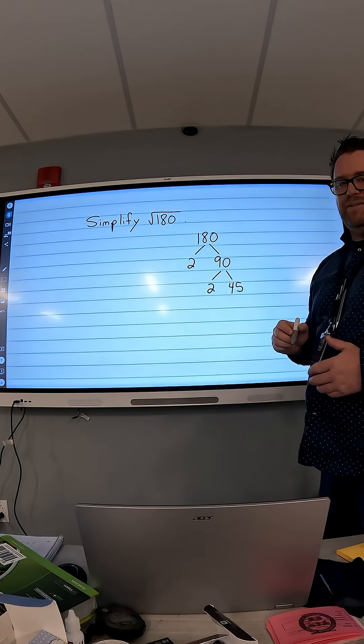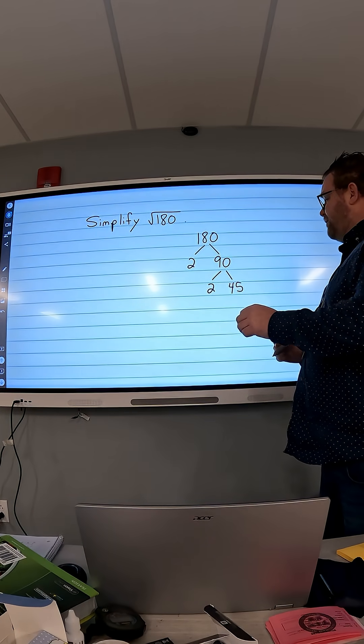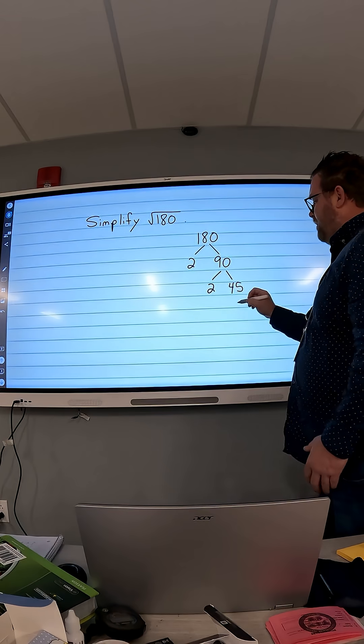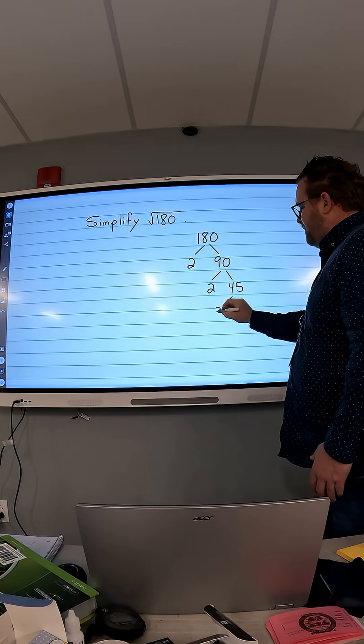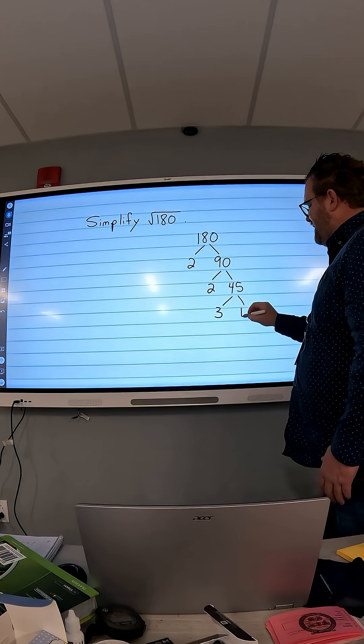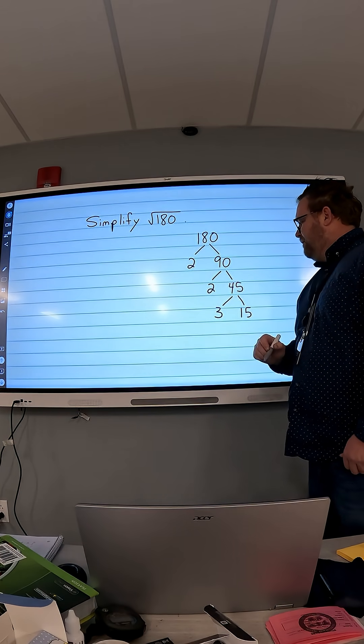45 is not even, but 5 plus 4 is 9, and 9 is divisible by 3. So I can't divide by 2, but I can divide by 3. So 3 times 15 is 45.